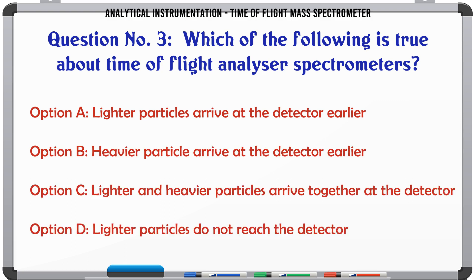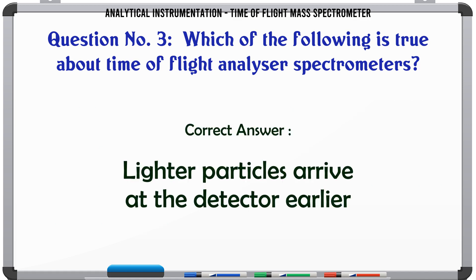Which of the following is true about time-of-flight analyzer spectrometers? A: Lighter particles arrive at the detector earlier. B: Heavier particles arrive at the detector earlier. C: Lighter and heavier particles arrive together at the detector. D: Lighter particles do not reach the detector. The correct answer is A: Lighter particles arrive at the detector earlier.